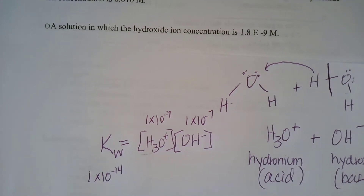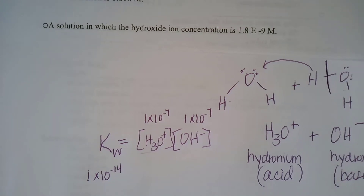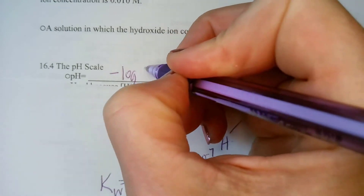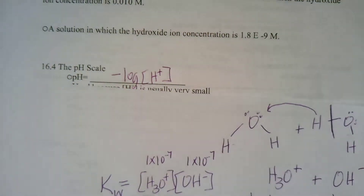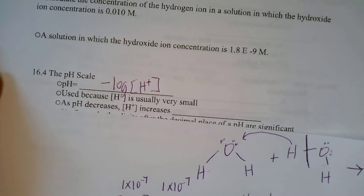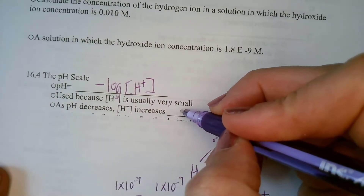The next step is looking at these powers of 10 and putting them into a logarithmic function known as the pH scale. We like to use the pH scale because it puts values like 1×10 to a power into whole numbers between 0 and 14. It is a logarithmic function that turns small concentration numbers into more manageable numbers. For the pH scale, we use the negative log. As pH decreases, the hydrogen ion concentration increases exponentially.